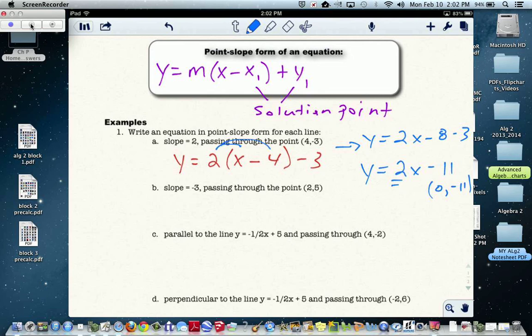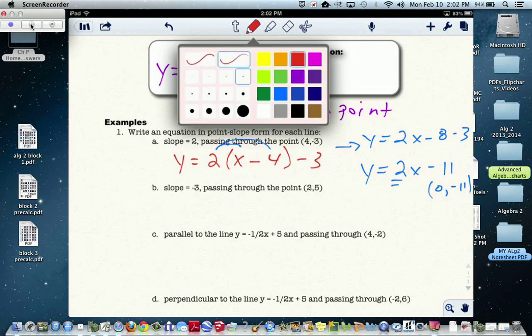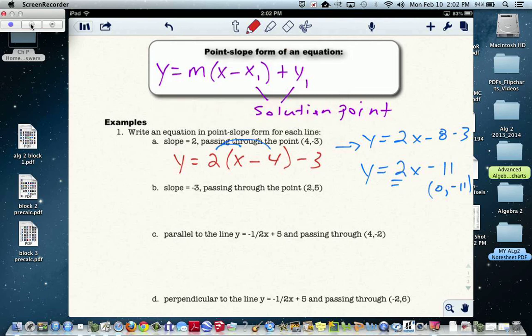What if the slope is negative 3, and we pass through the point (2, 5)? So again, we can take y equals -3, x minus 2, plus 5.